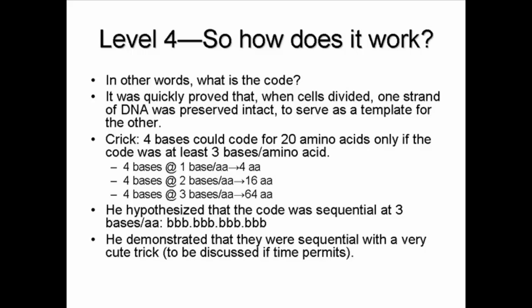Crick then demonstrated, by creating mutations in which one base was either removed or added, that the coding had to be in sequence — that is, bases one, two, three coded for one amino acid; four, five, six coded for the next; and the sequence would be read three by three by three.